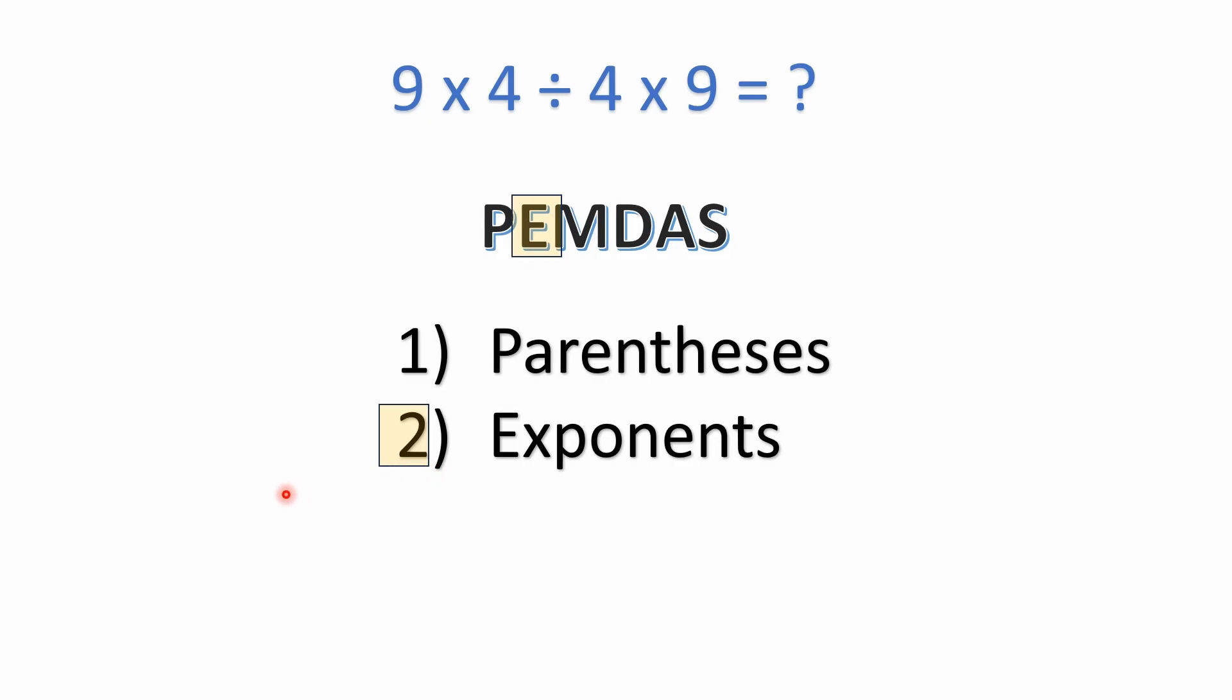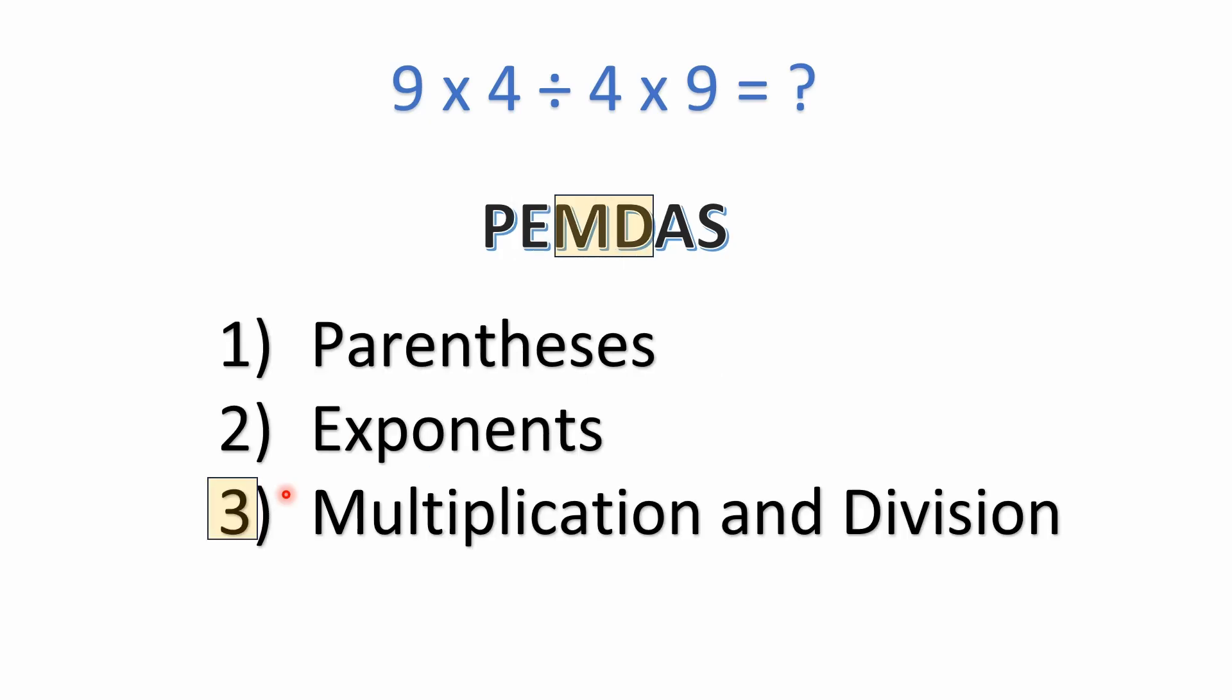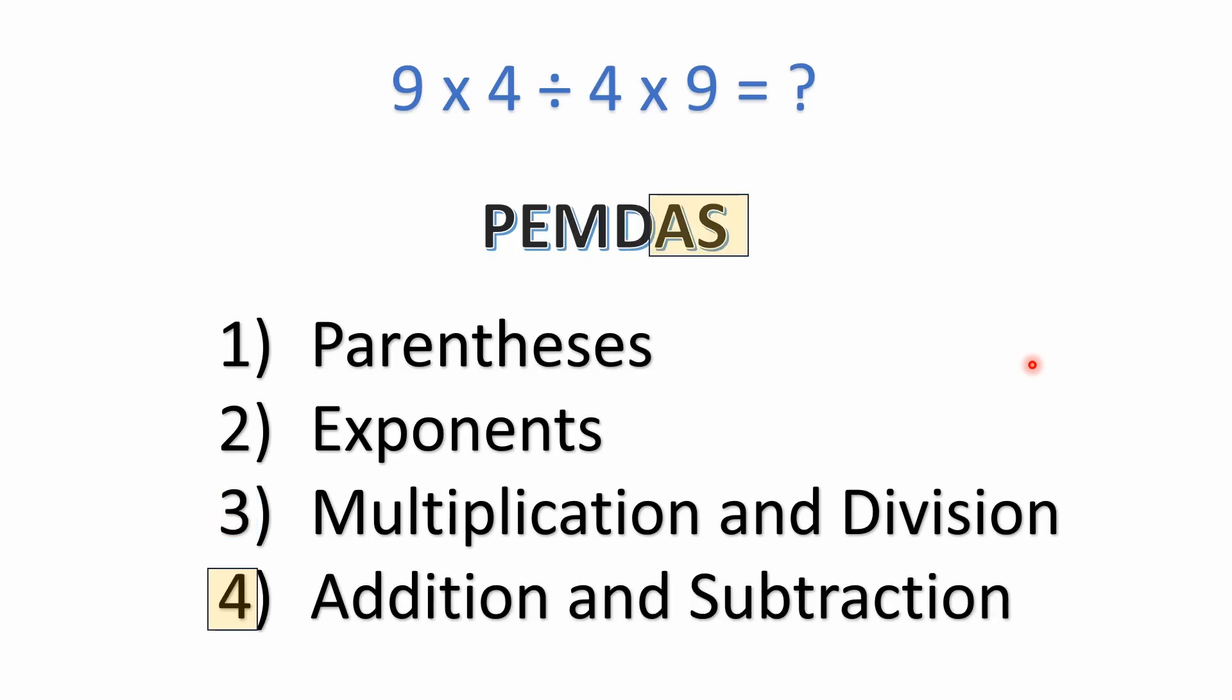Number three is multiplication and division. This is one that confuses a lot of people. They see the M before the D and assume that you do the multiplication before division. Actually, multiplication and division have equal precedence, so they're just solved left to right. So if division was before multiplication in the problem going left to right, you would do it first. Just remember they have equal precedence.